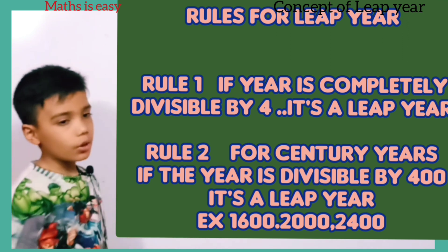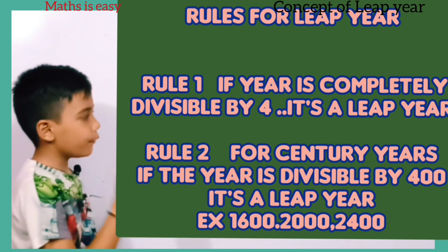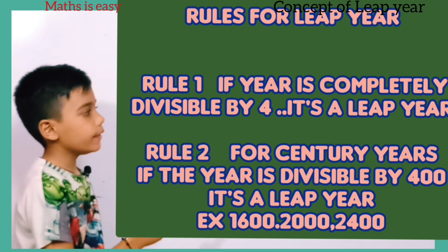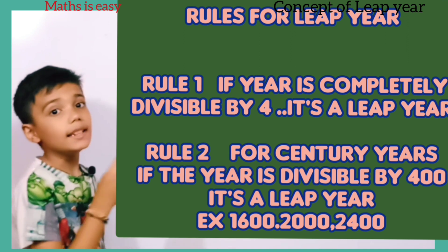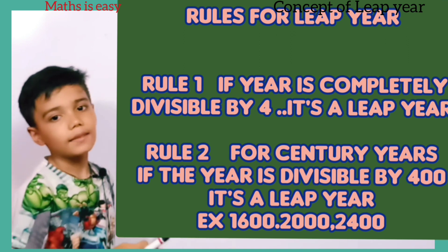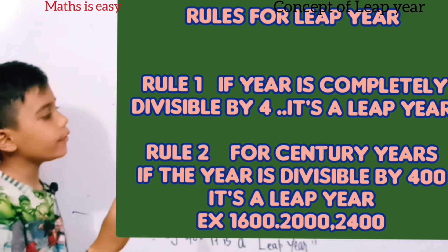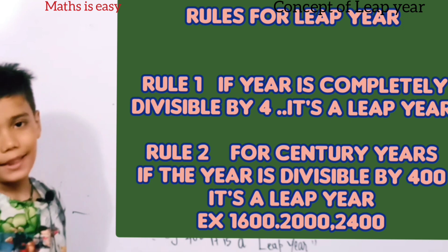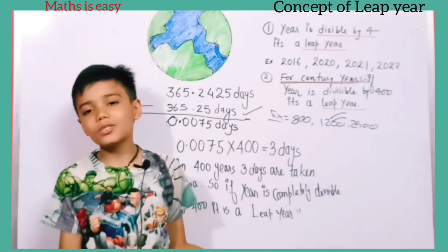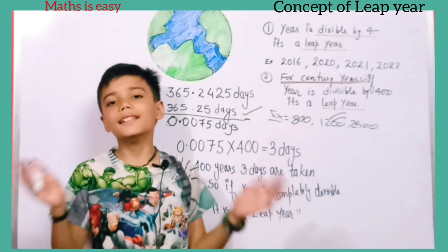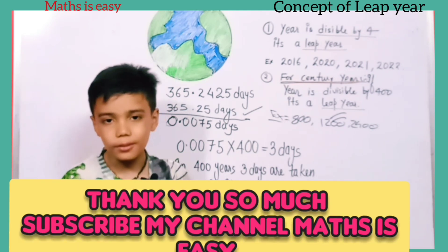Rule 2: for century years, if the year is evenly divisible by 400, it is a leap year — for example, 800, 1200, and 2400. I hope you understood the concept of a leap year. Thanks for watching the video.